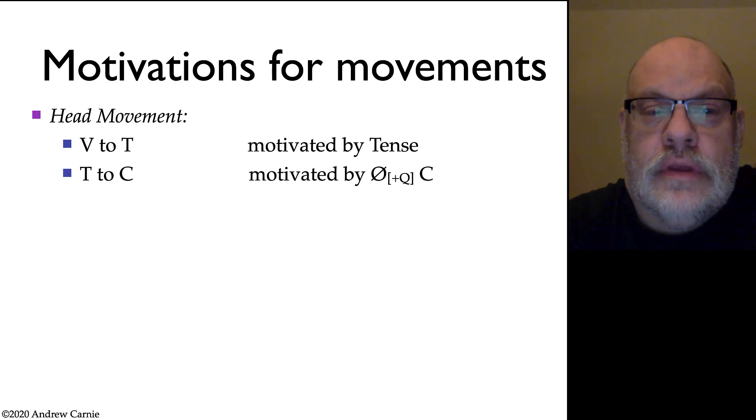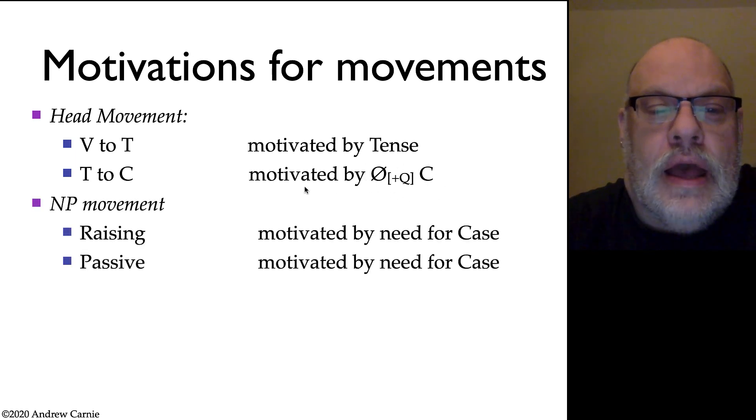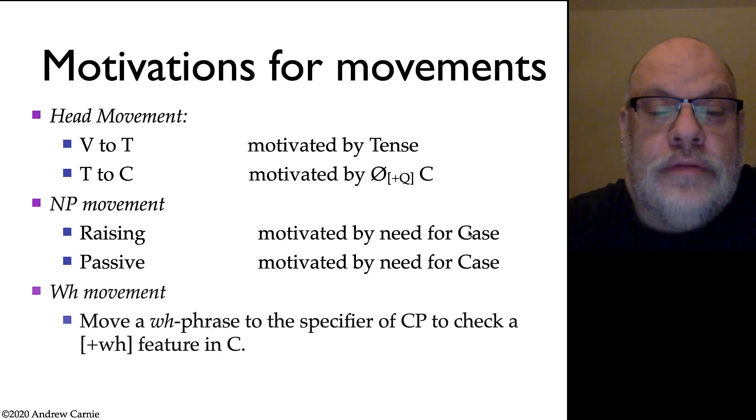So why do we move things? In head movement, we move things because verbs want to be near their tense node, right? We want to check the verb's tense features against the T node. We move T's to C's because we want to indicate a question, when we have a plus Q complementizer. We do NP movement in raising and passives because of the case filter, the requirement that NPs or DPs require some kind of case feature. Why do we move WH elements? We do this so that the WH phrase is in the specifier of the CP to check off that WH feature in the complementizer. In every case, what we're doing is we're creating some kind of local configuration whereby one element is moving to be closer to another so they can check features.